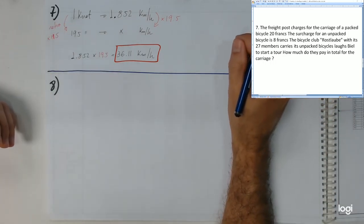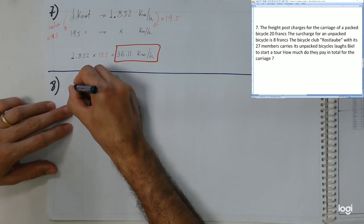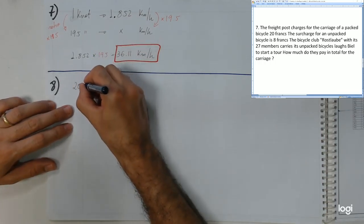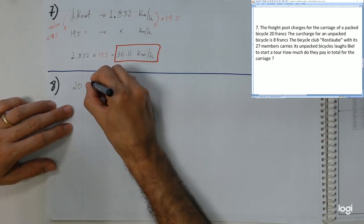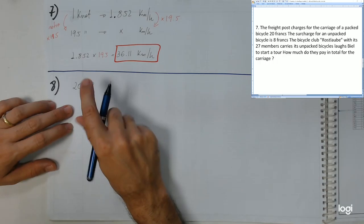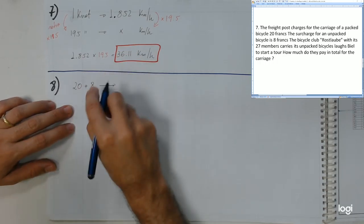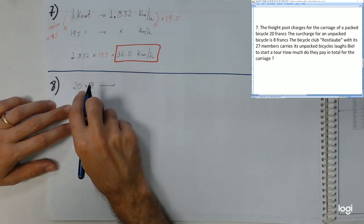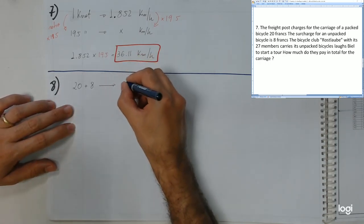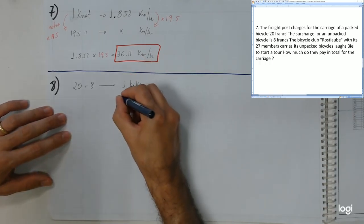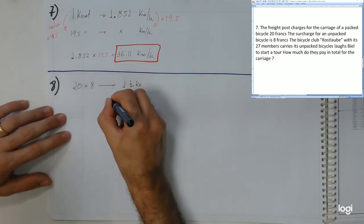Well, in the end we know that all the bicycles they are being transported are not packaged, so the company is going to pack everybody and therefore is going to charge 20 francs, the basic transportation charge, plus 8 francs because they are going to add the packing costs. That's 28.